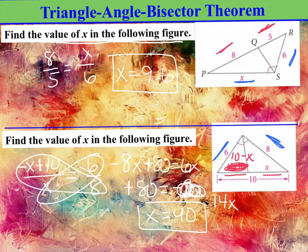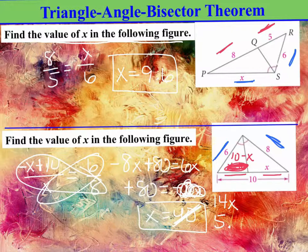Okay, and then after that, divide both sides. Then once you divide both sides by 14, X should equal about 5.7.